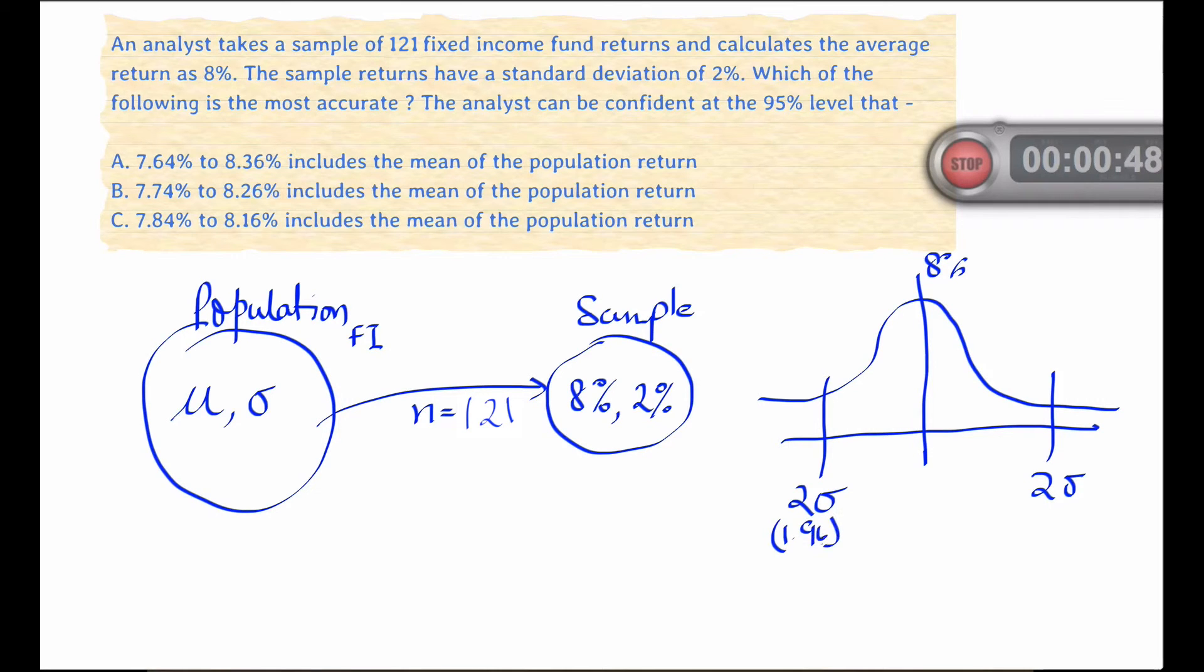The 95% confidence interval is the area of the curve bounded by two standard deviations approximately. Now the standard deviation from the central limit theorem for this distribution of sample means is s, which is the standard deviation of the sample divided by the square root of n.